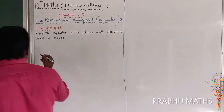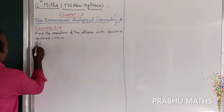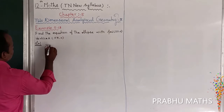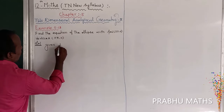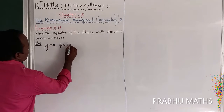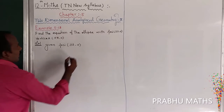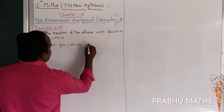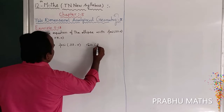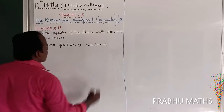The given information is: foci at plus or minus 2 comma 0, and vertices at plus or minus 3 comma 0.